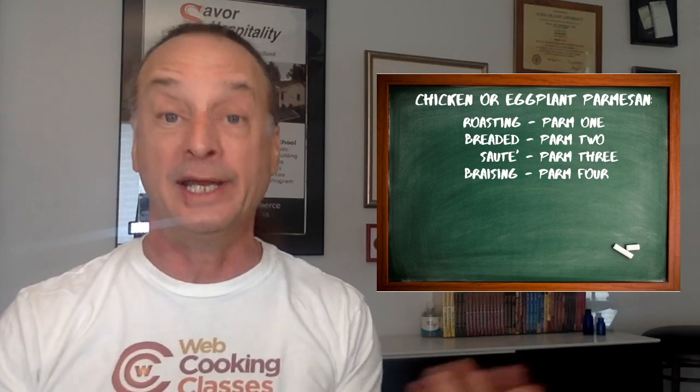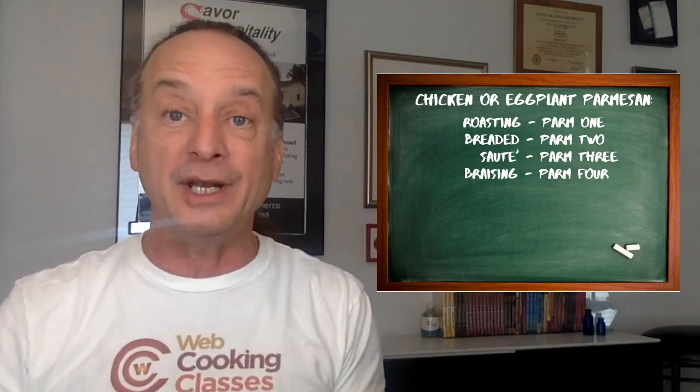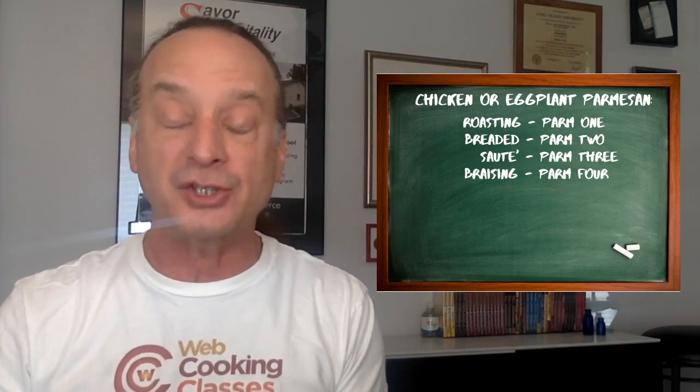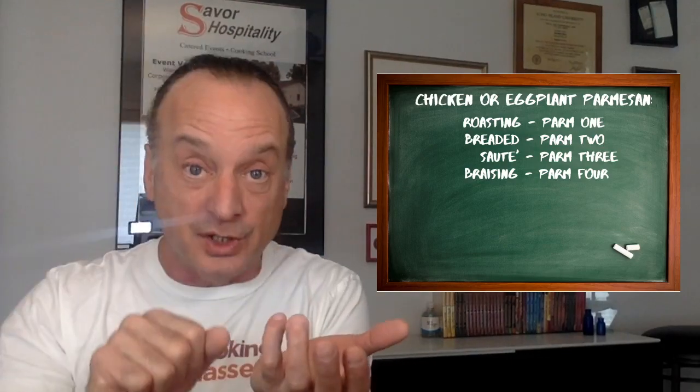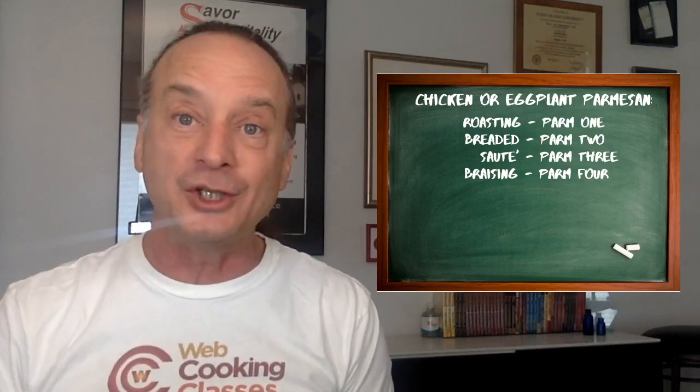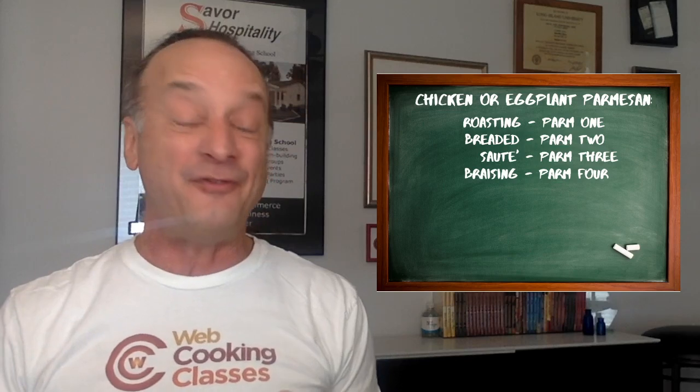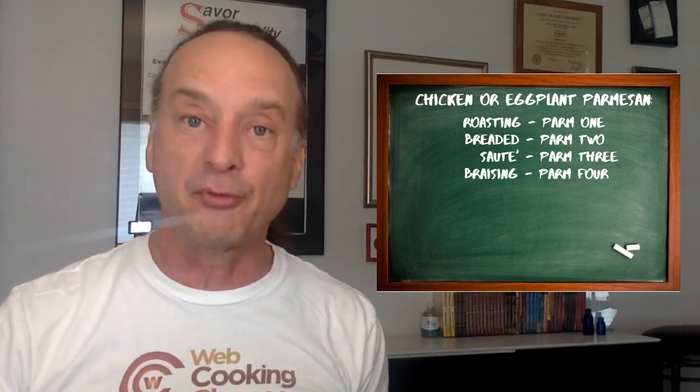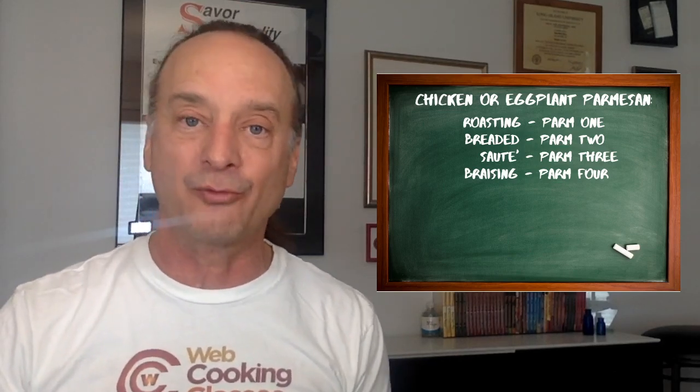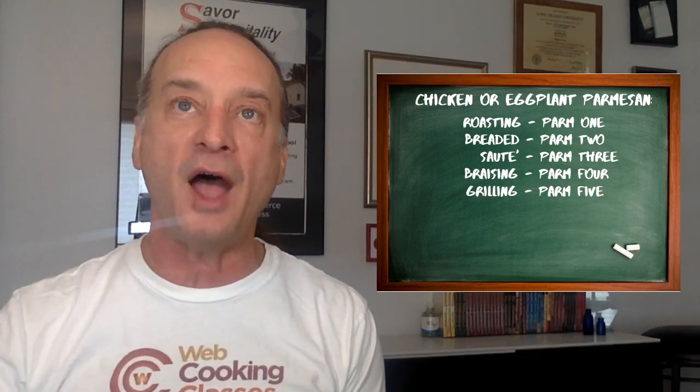Grilled chicken parm is really easy. Grill your chicken breast, put hot tomato sauce on top, put some grated cheese on so it melts faster, and then you can close the grill lid and let the cheese melt if you want. Grilled chicken is going to taste, look, feel much different than a breaded or sautéed or roasted one for sure. You get different results. Parm number five is my grilled parm.